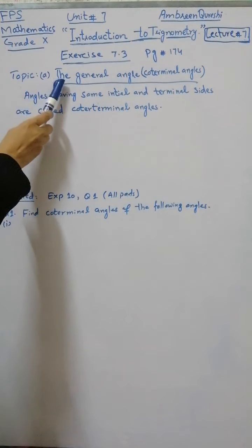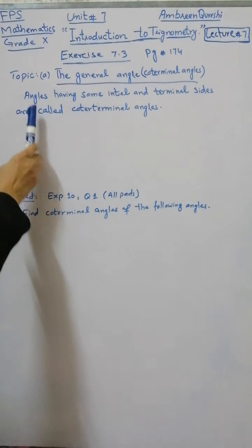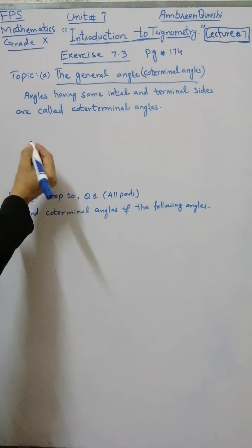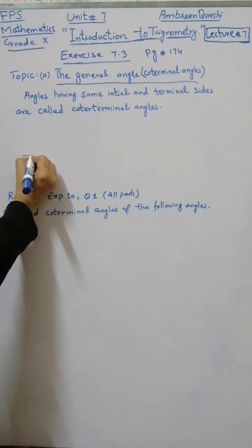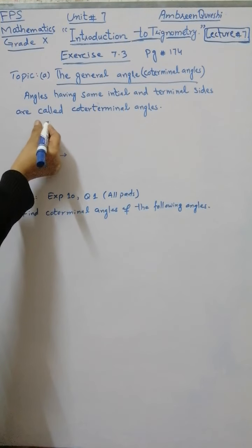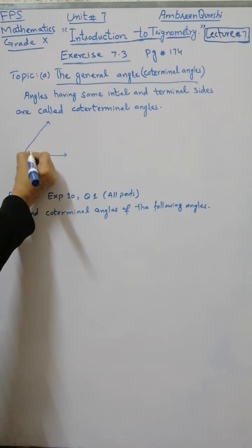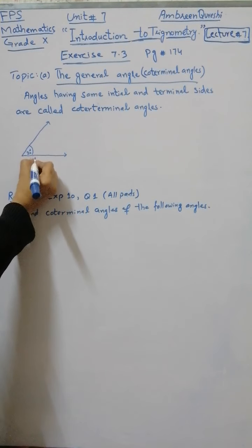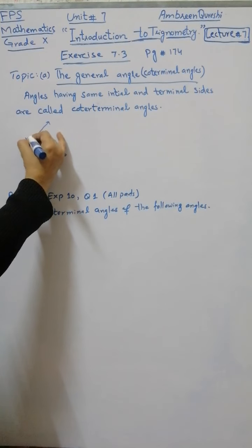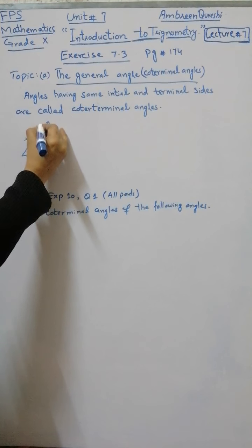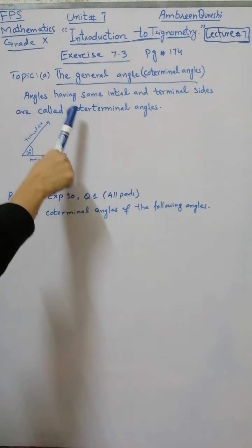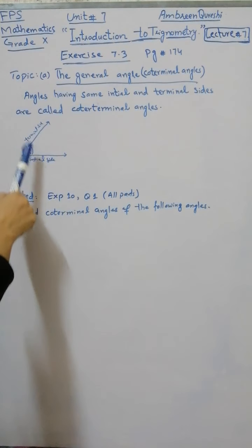The first topic is the general angle or co-terminal angles. Angles having the same initial and terminal sides are called co-terminal angles. For example, you have an angle of 30 degrees with an initial side and a terminal side. In this angle, you have two sides — an initial and a terminal side.